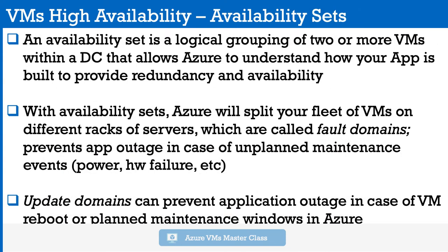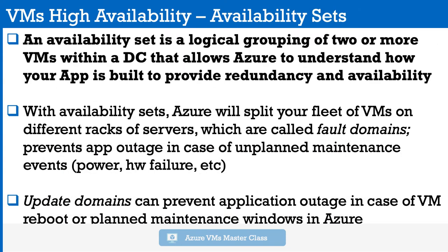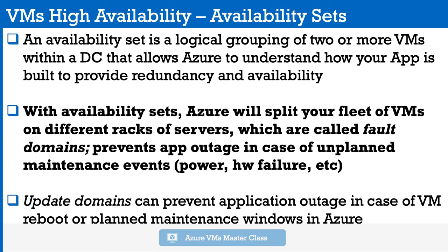The next option is availability sets. An availability set is a logical grouping of two or more VMs within a data center that allows Azure to understand how your application is built in order to provide redundancy and availability. With availability sets, Azure will split your pool of VMs across different racks of servers, called fault domains, which helps prevent application outage in case of unplanned maintenance events such as power failure or hardware failure.